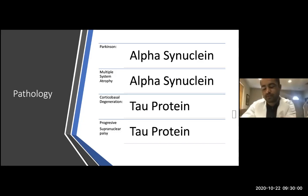Not only that, but the type of accumulation of alpha-synuclein protein and tau protein in each of these diseases is different — it's not the same, which is very interesting. The genetics is even more interesting.